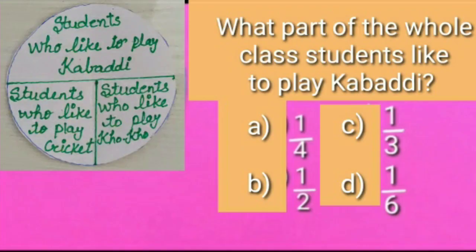Now it is time for today's question. Our today's question is: according to the shown pie chart, what part of whole class students like to play kabaddi? We have four options. Option A is one by four, option B is one by two, option C is one by three, and option D is one by six.